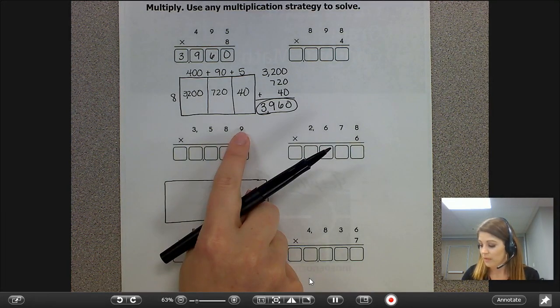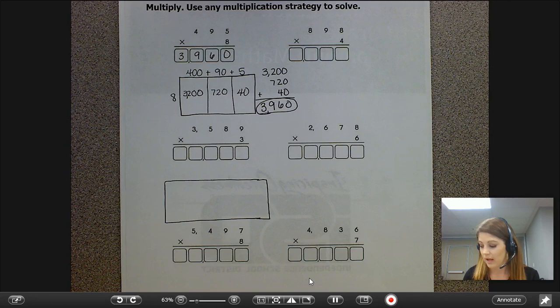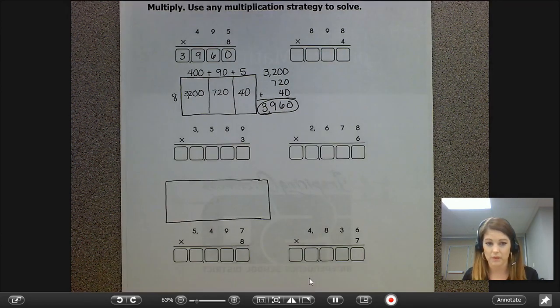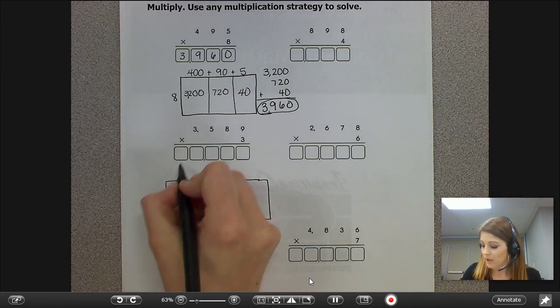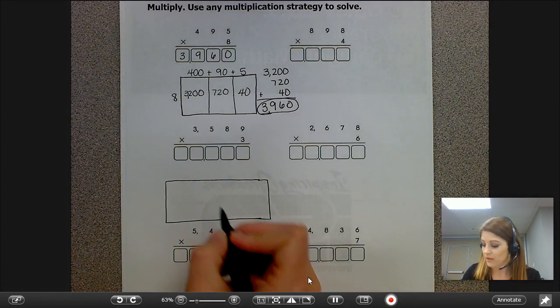So my largest number is 3,589 and the smallest one is 3. So I'm going to break down 3,589 into place values.